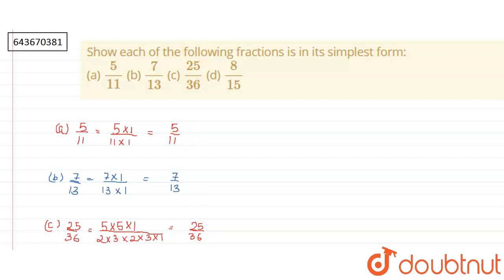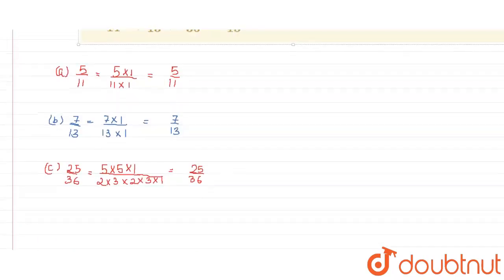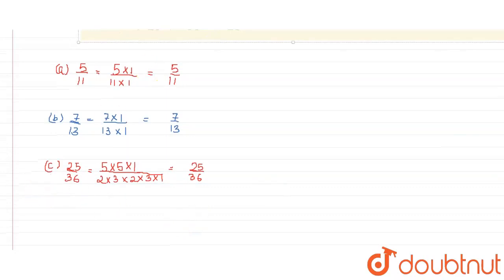Let's move to the last one, part D, 8 by 15. When we factorize 8, we get 2 into 2 into 2 into 1.